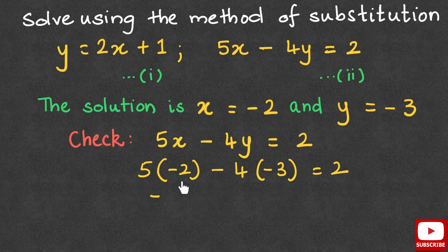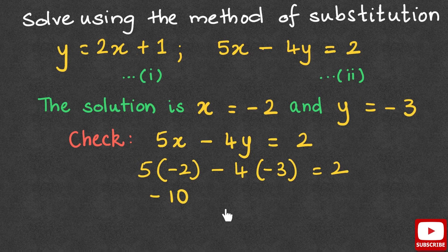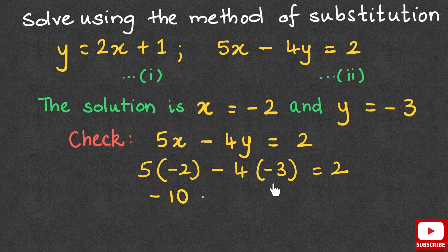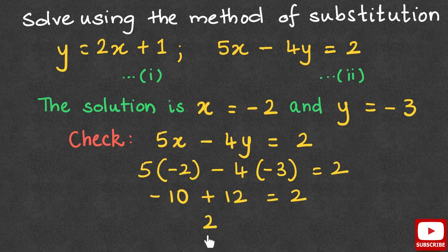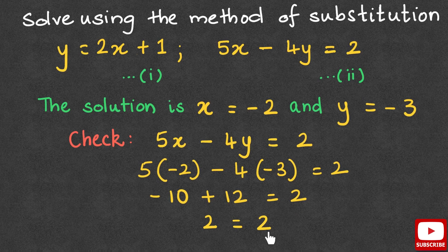5 times negative 2 gives us negative 10. Negative 4 times negative 3 gives us positive 12, which is equal to 2. On the left-hand side, we have negative 10 added with positive 12, that is 2, which is equal to the right-hand side.